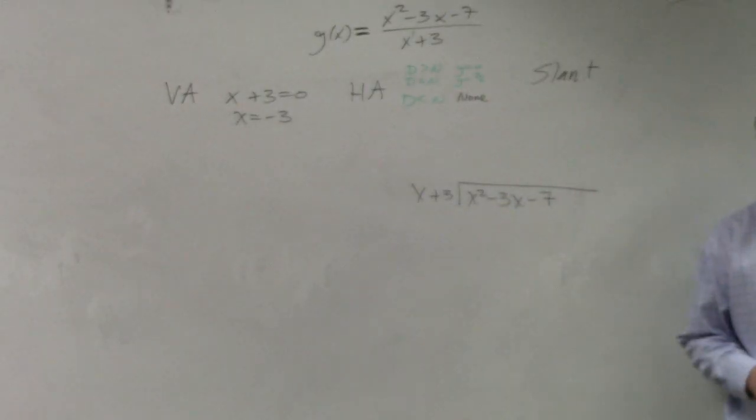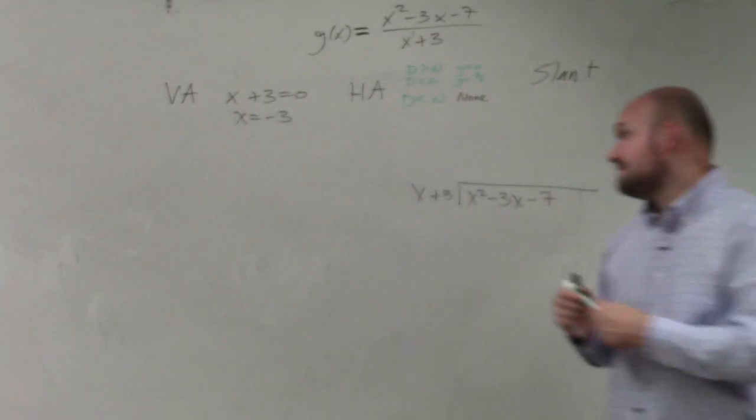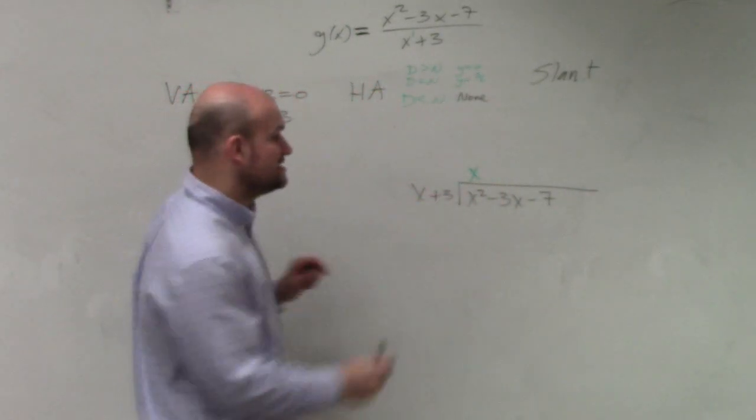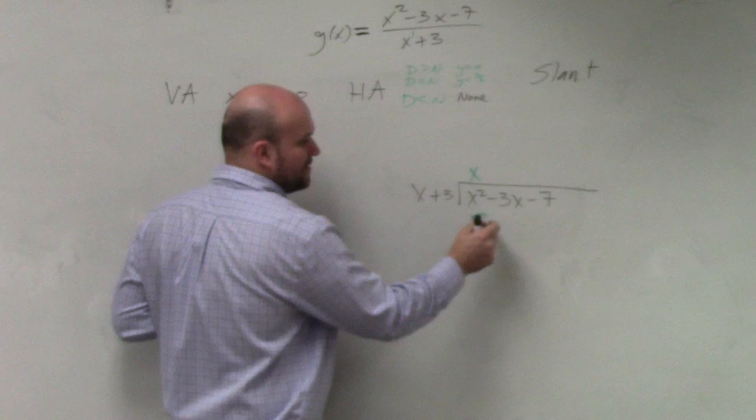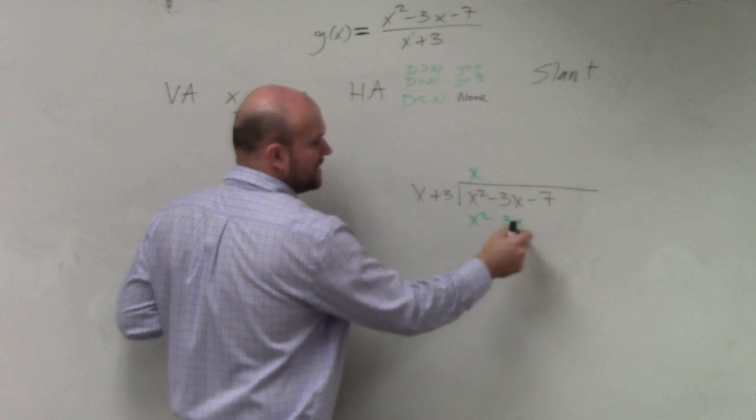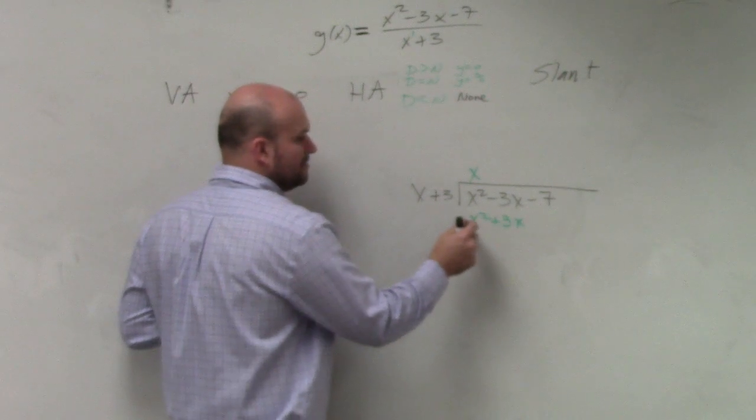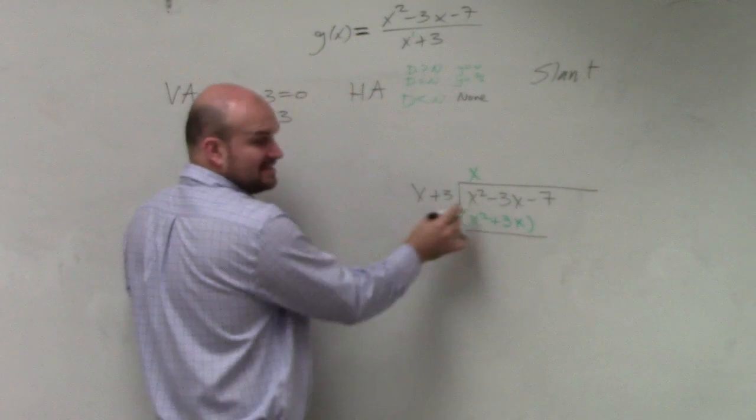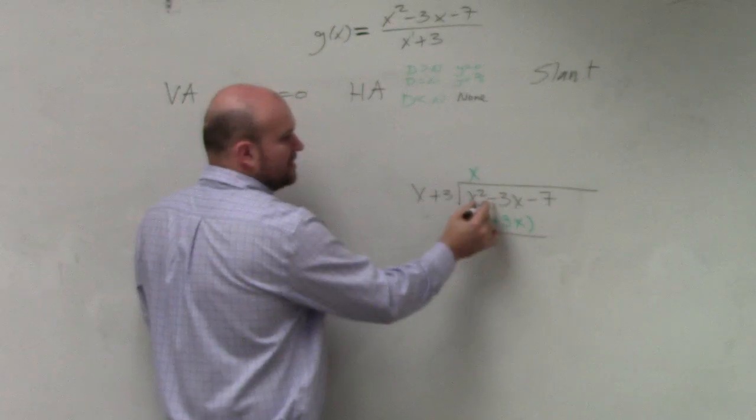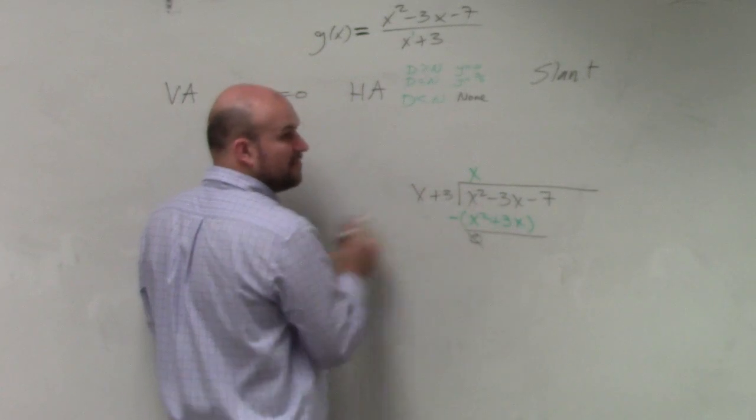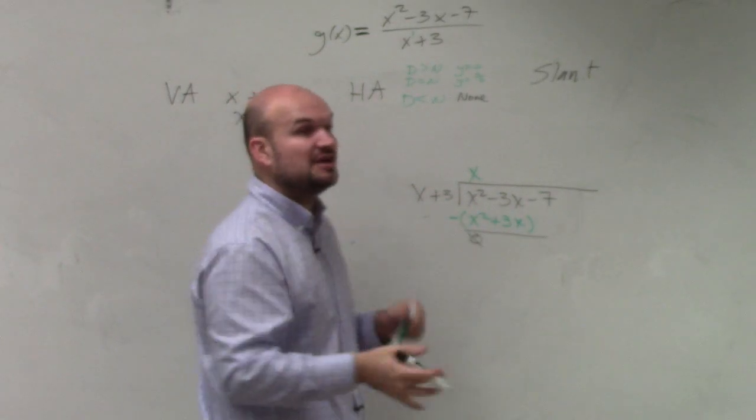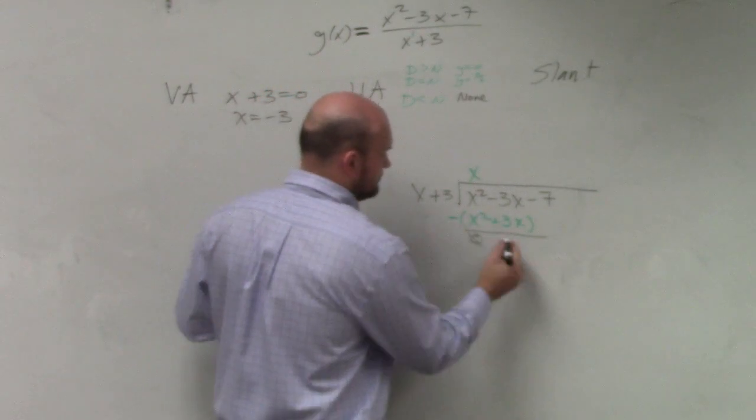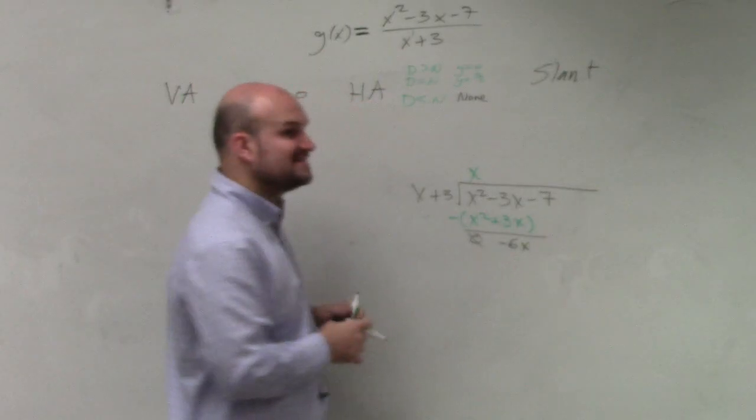How many times is x divided into x squared? x times, because x times x gives you x squared. x times 3 gives you 3x. Then we subtract the rows. x squared minus x squared is 0. Negative 3x minus 3x. So if you owe me $3 and you borrow three more dollars, you now owe me $6. So negative 6x.